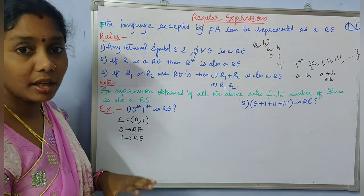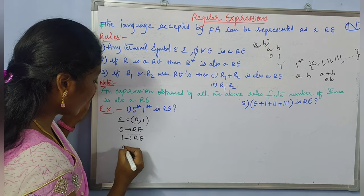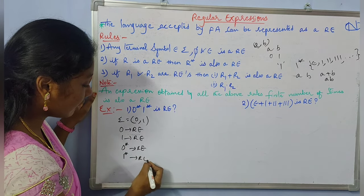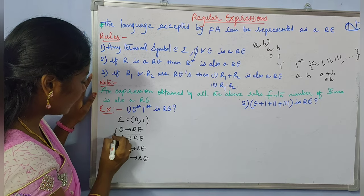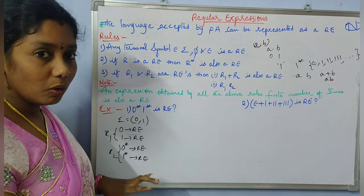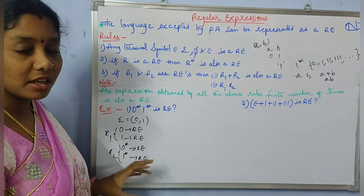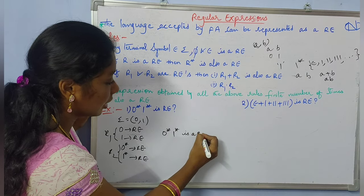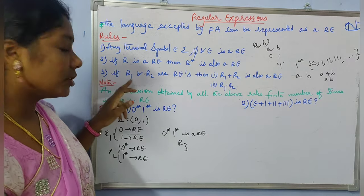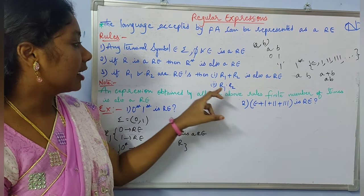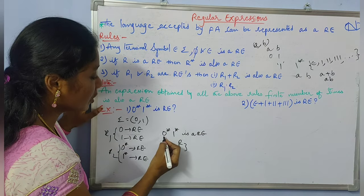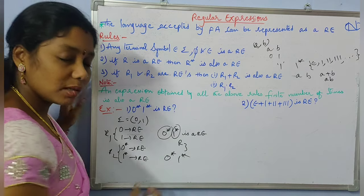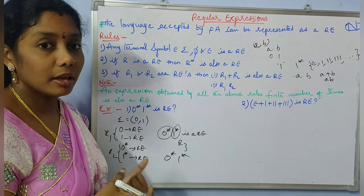From rule 2, if r is a regular expression then its closure is also a regular expression. So from rule 2, I can say that 0* is a regular expression because 0* is the closure of 0, and 1* is a regular expression. So 0* is from rule 2 and 1* is from rule 2, while 0 and 1 are from rule 1. Now I know that 0* is a regular expression and 1* is a regular expression. From rule 3, their concatenation 0*1* is also a regular expression. So in this way, we can prove that 0*1* is a regular expression.